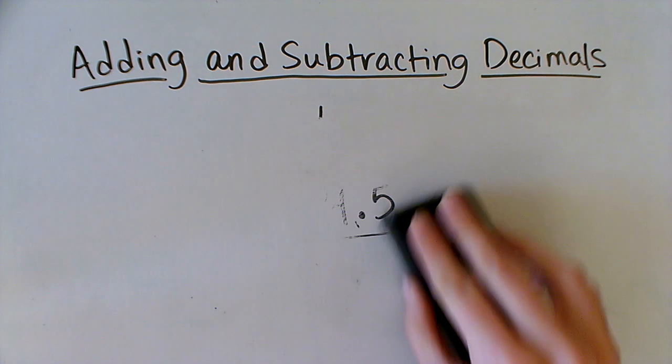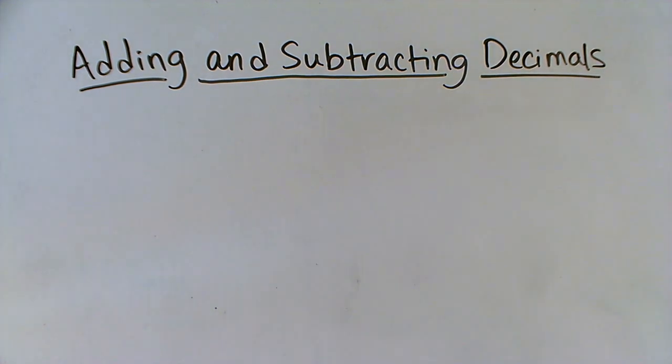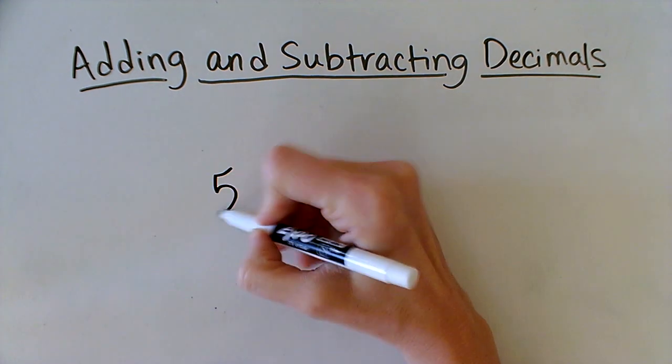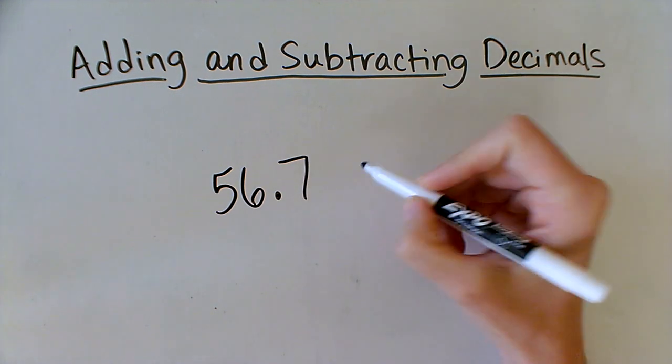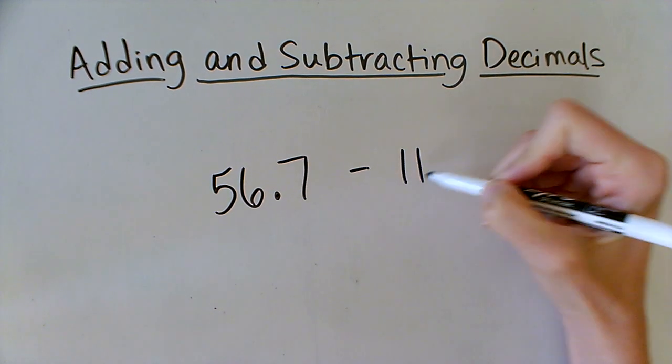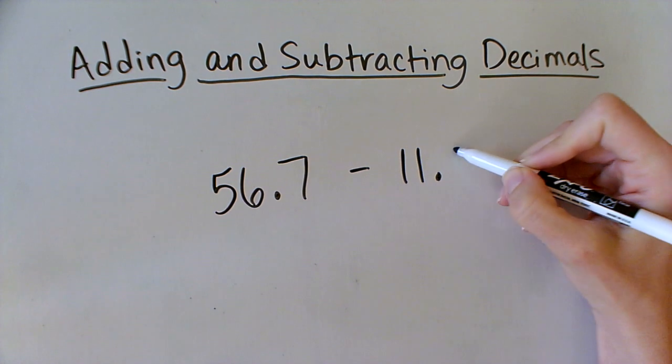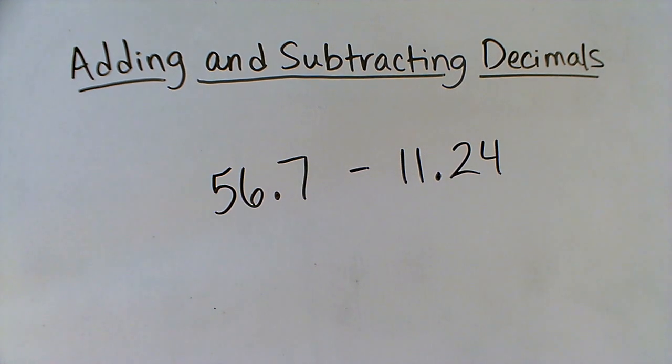Let's try a subtraction problem. Just like with adding, it's the same as subtracting normal numbers; you just have to make sure to keep the decimals lined up. So let's try 56.7. We're going to subtract 11.24.